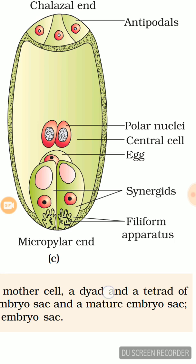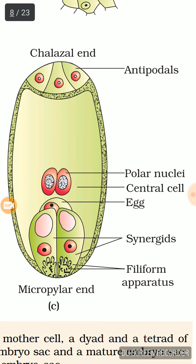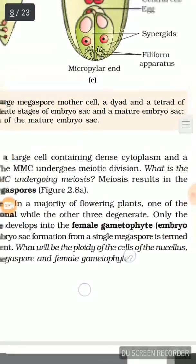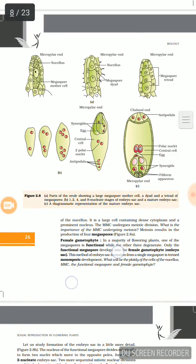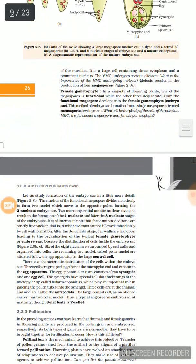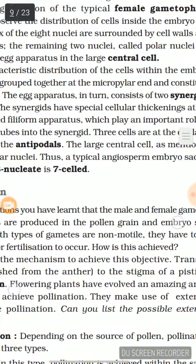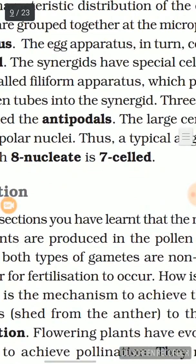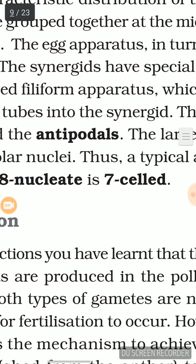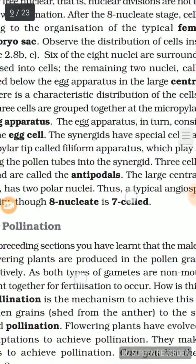This is said to be a three plus two plus three arrangement, which constitutes the total number of cells. It is also described as a seven-celled and eight-nucleate state. This is the form of the ovule.